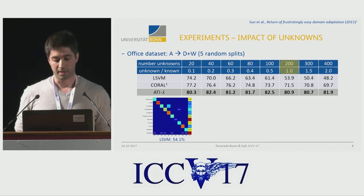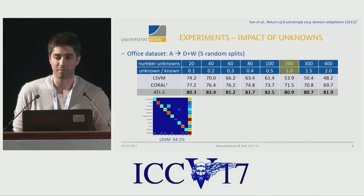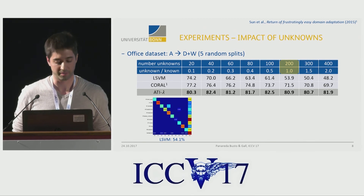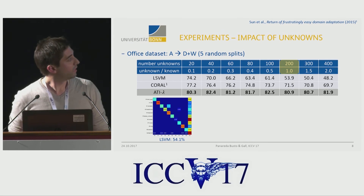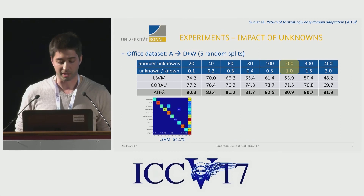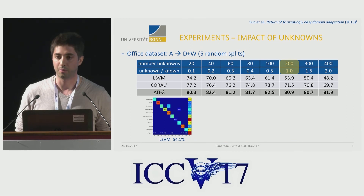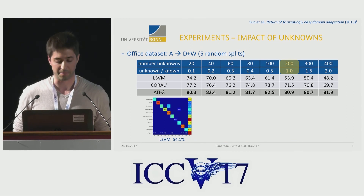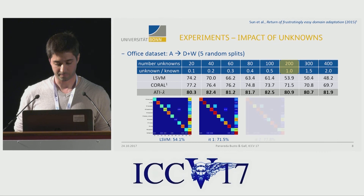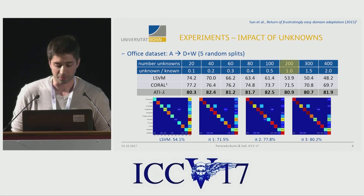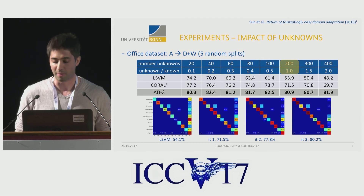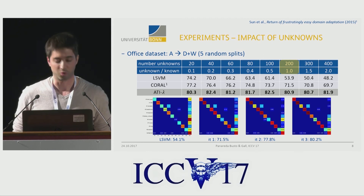Looking closer at one case with equal numbers of known and unknown samples, we see that the unknown class makes the confusion matrix of the linear SVM baseline very unbalanced. As we iterate our method, the confusion matrix becomes stable and more balanced, and at the end we get more than 25% improvement compared to the baseline.